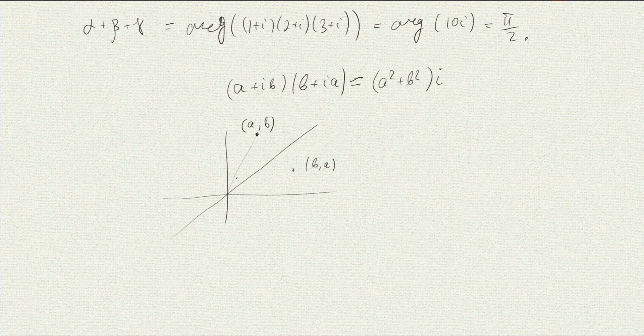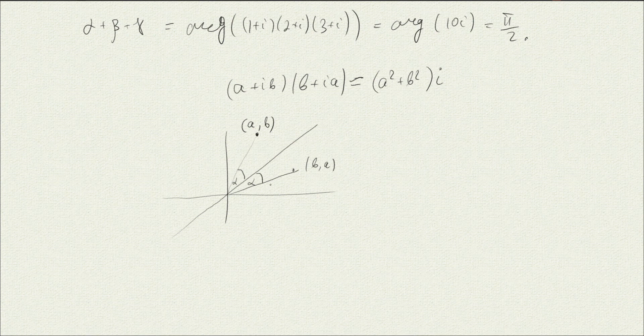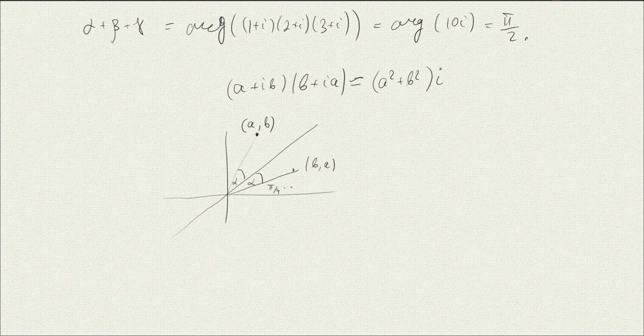So say the angle here was alpha, and here the angle was alpha. And here we know that this angle is 45 degrees, so it's pi quarter minus alpha.